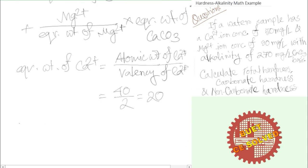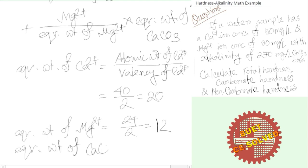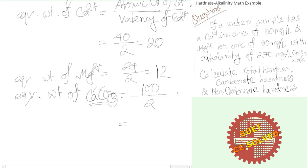Similarly, the equivalent weight of magnesium: the atomic weight of magnesium is 24 divided by 2, which equals 12. The equivalent weight of calcium carbonate — calcium, carbon, and oxygen — the total molecular weight is 100, and with valency 2, the equivalent weight of CaCO₃ is 50.